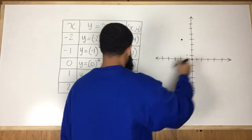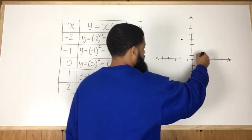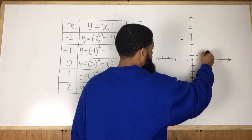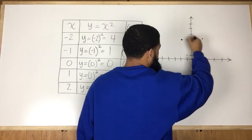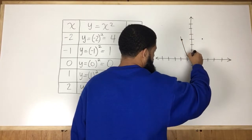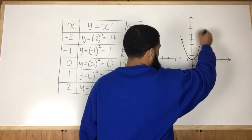0, 0, 1, 1, boom, positive 2, 4, boom. And if we connect those, they look like that.